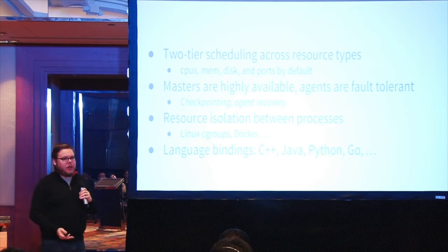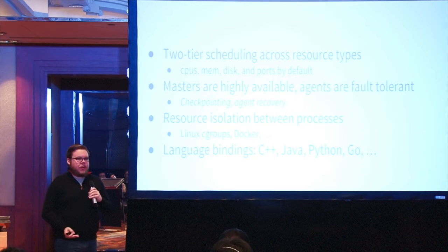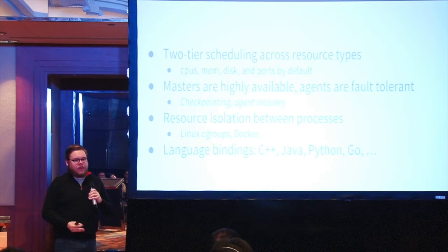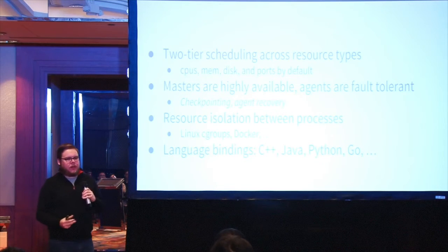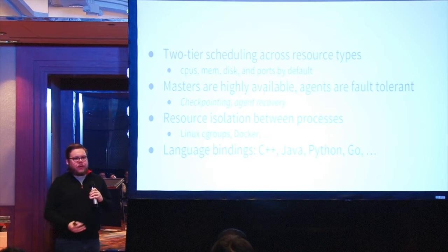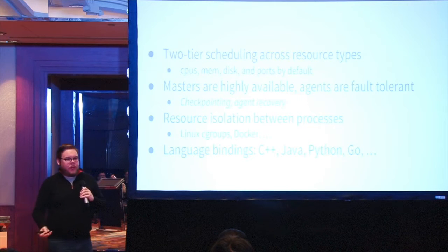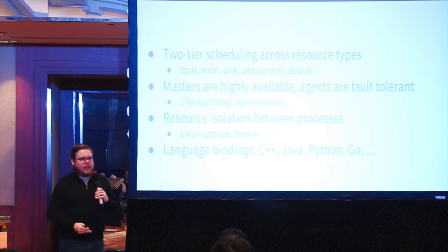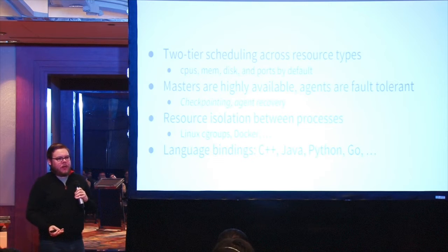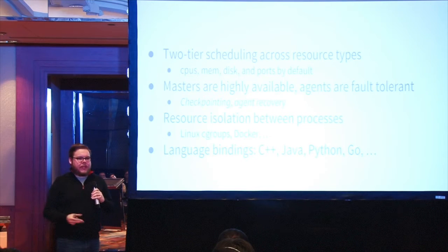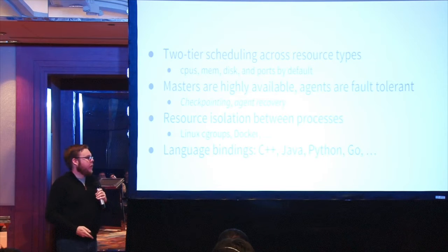Using Cgroups or Docker, there's resource isolation between processes and enforcement as well. So if a single process or container goes over its allocated memory, the Linux memory killer will come in and kill that process. It might be restarted elsewhere, but it's up to the scheduler to decide what happens with that container.